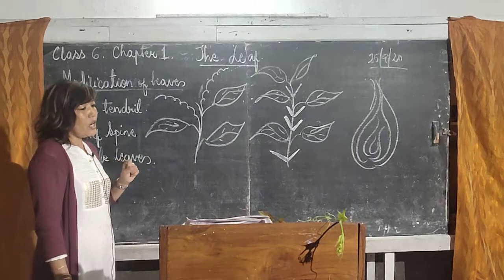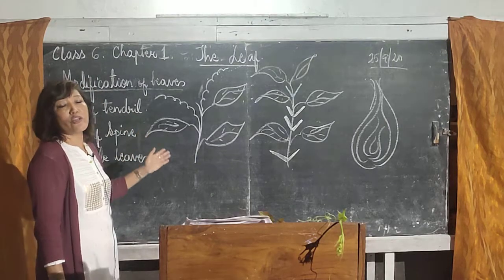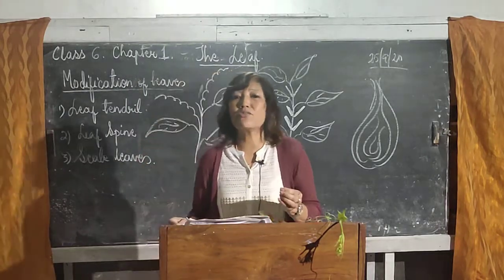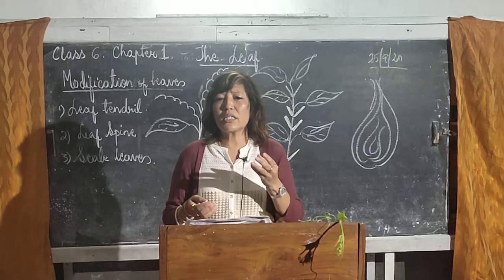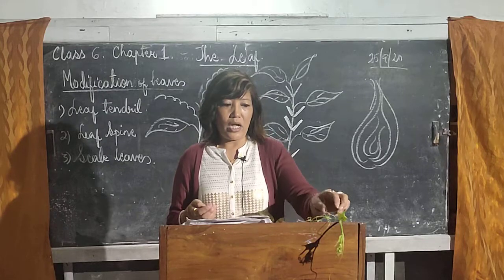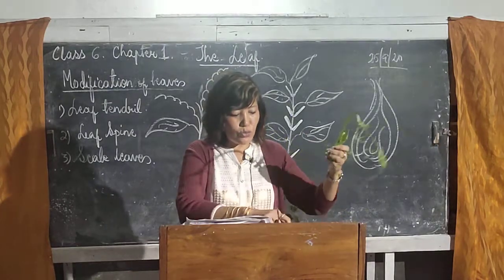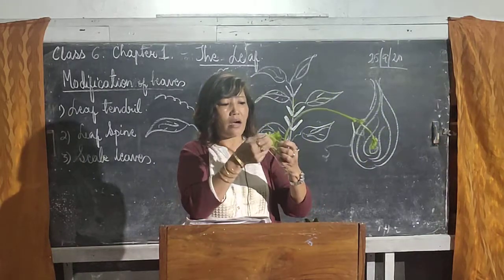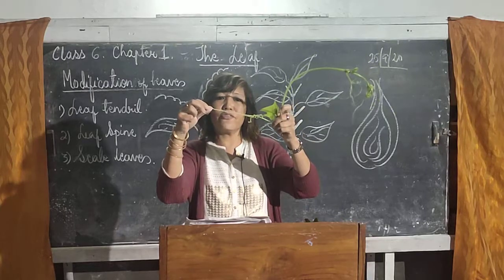What is leaf tendril? What type of modification is leaf tendril? In leaf tendril, the leaves are modified into a thin thread-like coiled structure, and these are called leaf tendrils. Here also you can see these are leaf tendrils.